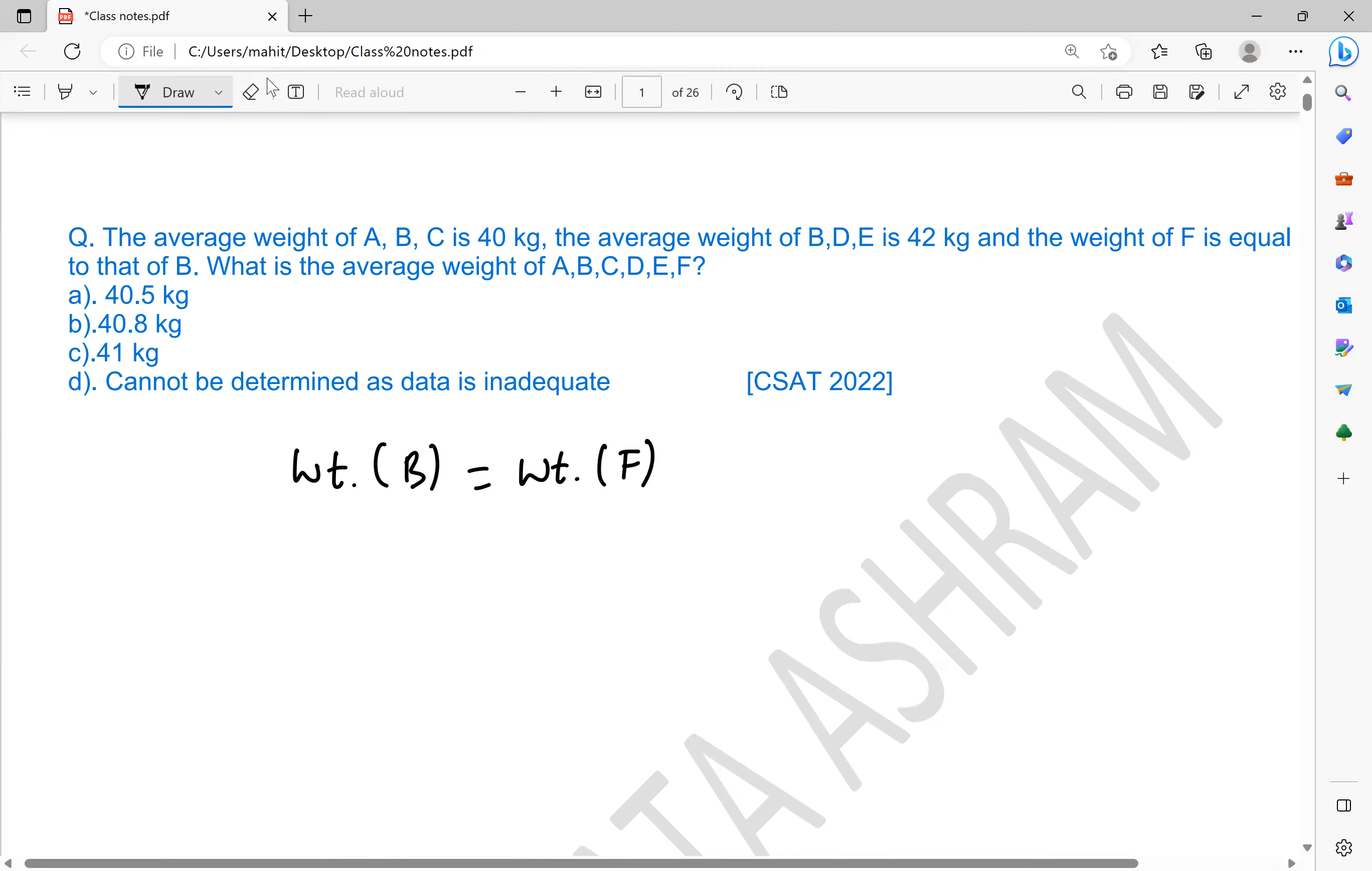So if the average weight of B, D, E is 42, then you can write that the average weight of F, D, E equals 42.